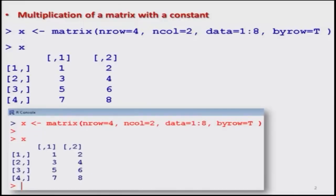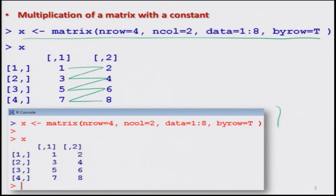Just for the sake of your understanding, in the last lecture we had created a matrix of order 4 by 2, where the data was arranged in rows with numbers from 1 to 8 — arranged as 1, 2, 3, 4, 5, 6, 7 and 8. This is again the screenshot of that matrix operation and its output. We are going to work on this type of matrix again.